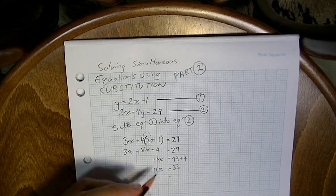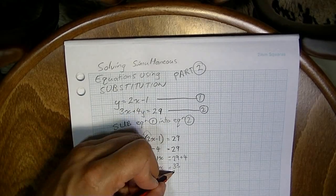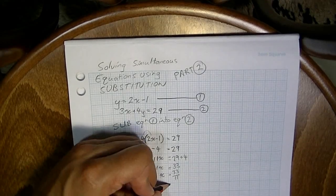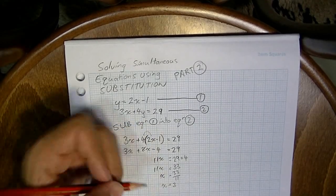Now, if I divide by 11, because I want to get x by itself, x equals 33 over 11, which means that x equals 3.